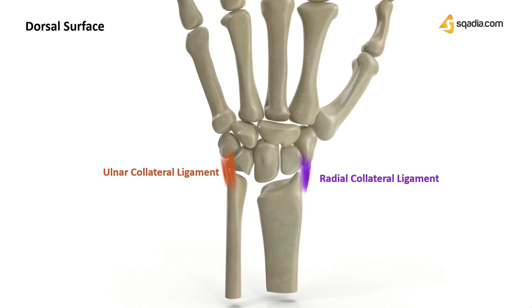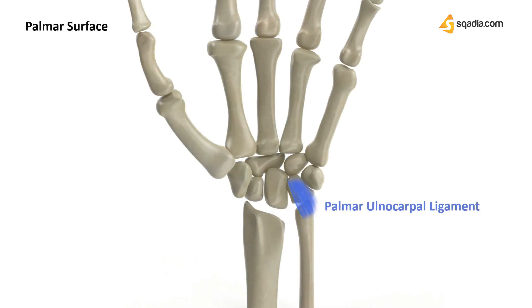A fifth ligament, the Palmar Ulnocarpal Ligament, is present and prevents adduction movement of the wrist joint. It also prevents the translocation of ulnar carpal bones to allow free movements of the hand. In the very next section, we will learn about the different movements of our wrist joints.